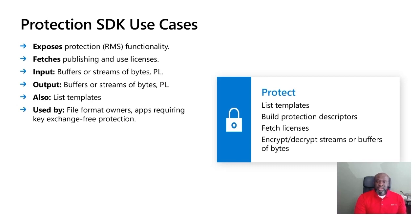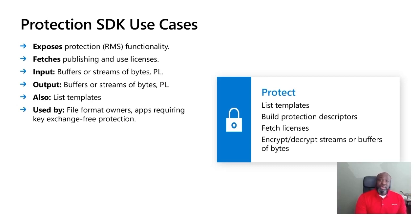A use case could be a company that produces 3D printing and has a proprietary file type. If they wanted to extend protections to that file type and only allow authorized users to print and view the documents, they can use the Protection SDK to protect the content of the document and only allow authorized users to print or view the document.